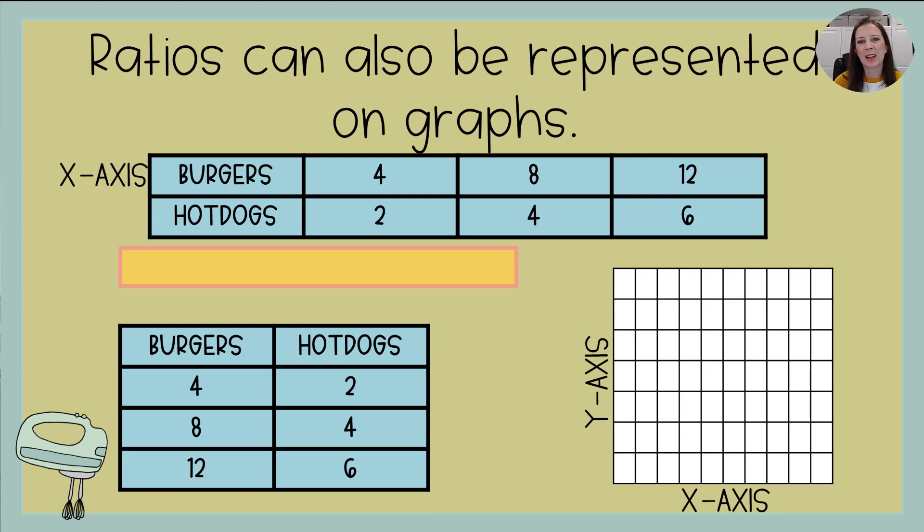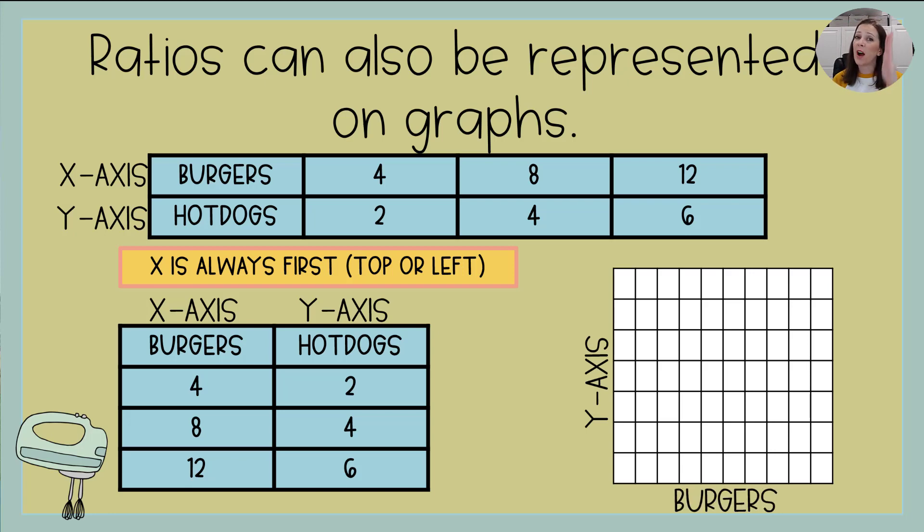On ratio tables, the x-axis is first. So if it's running this way, it's going to be on top. If it's running up and down, it's going to be on the left. Just like when you see in your alphabet, you say x, y, z, x came first. On ratio tables, x is always first. It's either on the top or it's on the left. And so that means the y-axis is always second. It's always on the bottom or it's always on the right. So looking at the graph here, the x-axis is on the bottom. We now know that's going to be our burgers. And the y-axis there on the side, that's going to be our hot dogs.